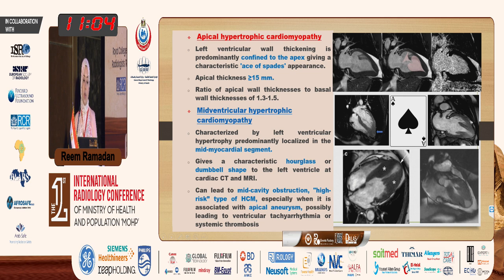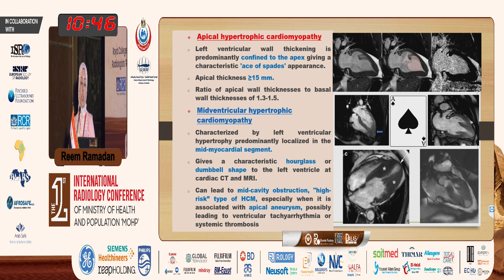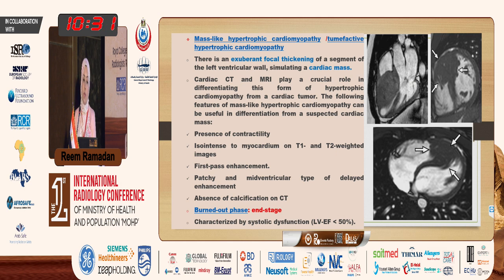The other type is mid-ventricular hypertrophy. Here the hypertrophy is localized in the mid-myocardial segment, as we see in diagram C, giving a characteristic hourglass or dumbbell-shaped appearance. This type is associated with high-risk patients because if it is associated with apical aneurysm, it can possibly lead to ventricular tachyarrhythmia or systemic thrombosis.